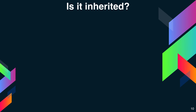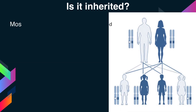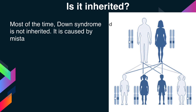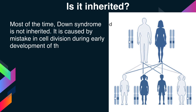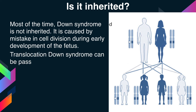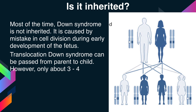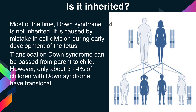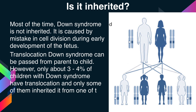Is Down syndrome inherited? Most of the time, Down syndrome is not inherited. It is caused by a mistake in cell division during early development of the fetus. Translocation Down syndrome can be passed from parent to child. However, only about 3-4% of children with Down syndrome have translocation, and only some of them inherited it from one of the parents.